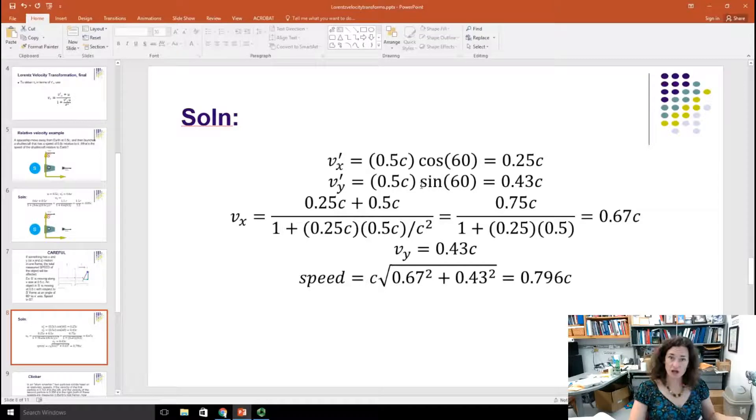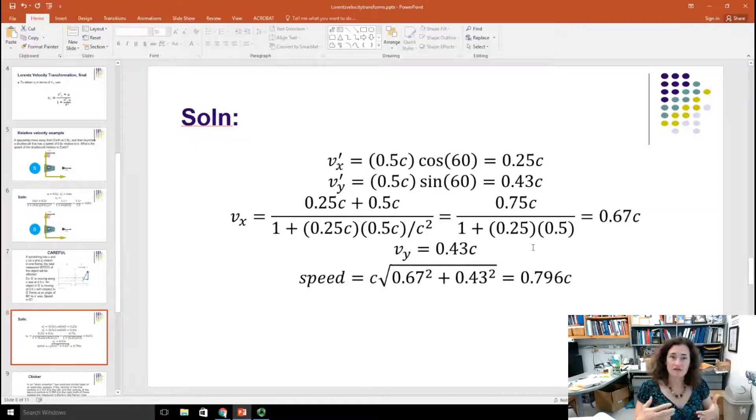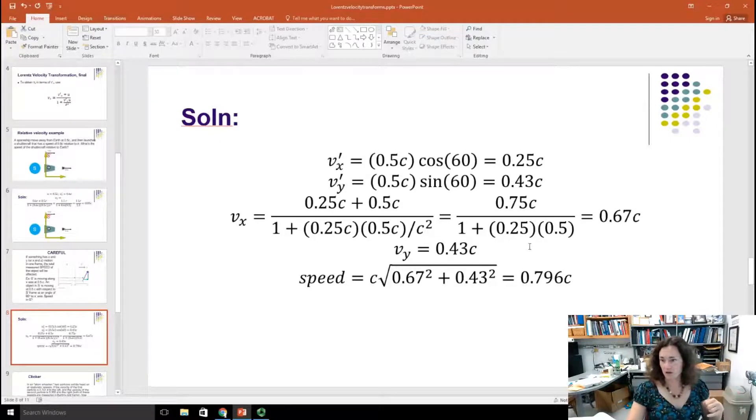That is the X component and the X component only. The Y component would be unchanged from the VY prime, because the frame itself is not moving along the Y direction. And so now what I can do is I can combine those in quadrature to get the total measured speed of the object in the stationary frame. And that would be c times the square root of 0.67 squared plus 0.43 squared, which gives me 0.796c. So that's how you would handle that kind of thing if it's traveling at some angle.